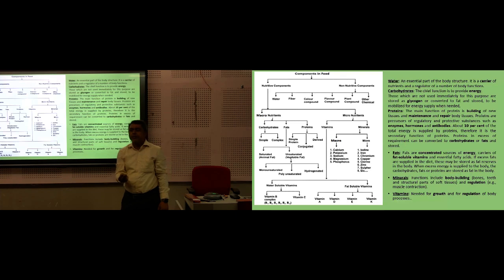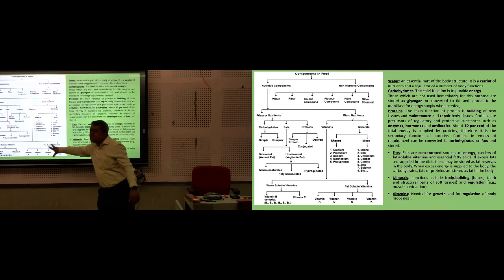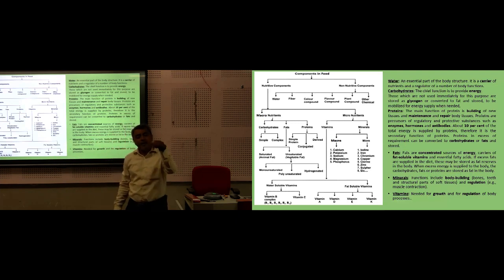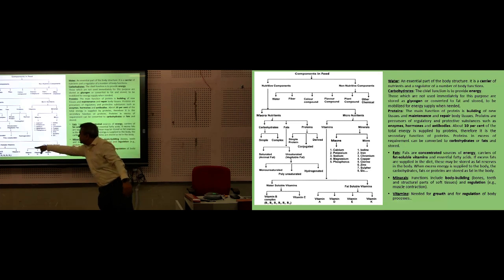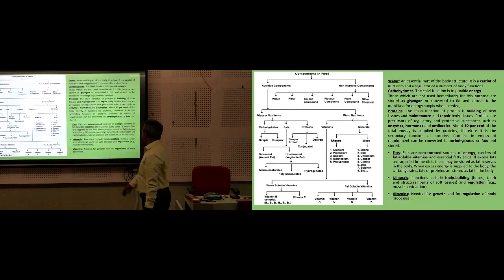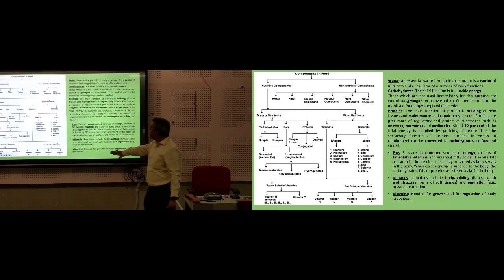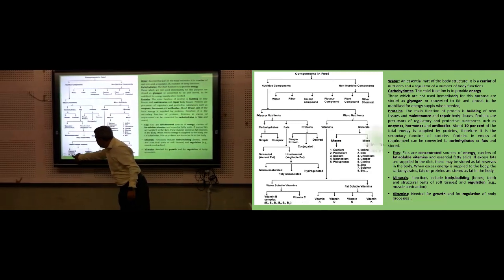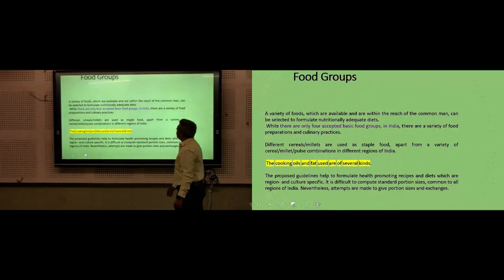Another food component required in very small quantity is vitamins. Vitamins have specific functions in our body. Vitamins are of two types: fat-soluble vitamins — A, D, E, K — and water-soluble vitamins, including vitamin C and the B vitamin family. Vitamins are needed for growth and regulation of the body. Each of these chapters will be taught in detail later on.